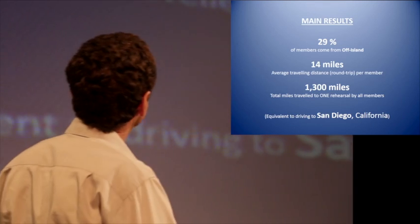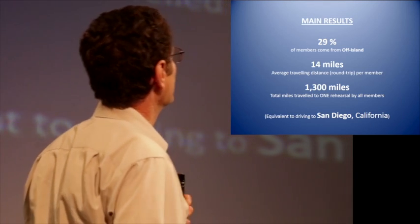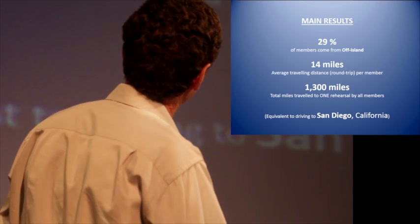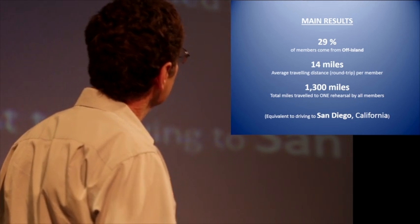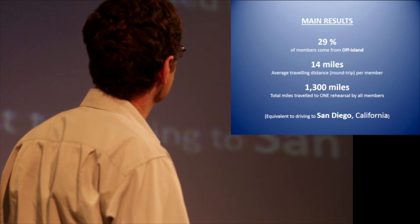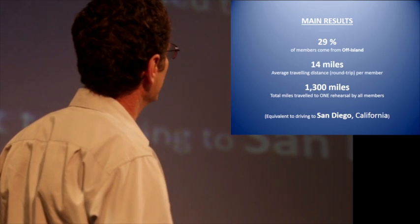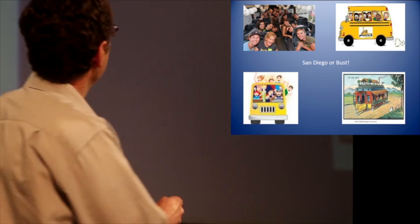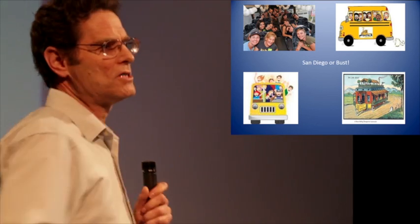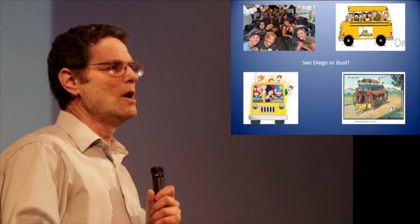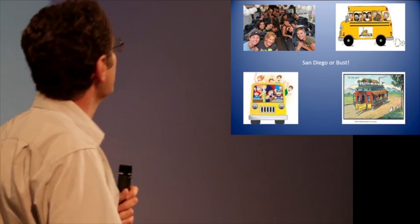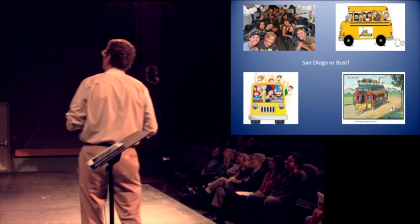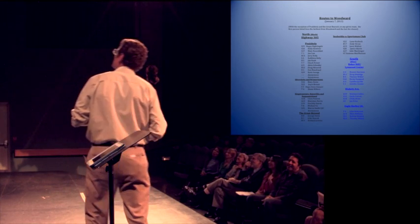The statistics are that 29% of the people came from off-island, from like Poulsbo and Kingston and places like that. The average distance was 14 miles per person round trip to one rehearsal, which totaled to 1,300 miles for everybody, which is the equivalent of going to San Diego. So I thought, why not just rent a van and drive down to San Diego, have our first rehearsal there, party for a week, soak up the sun, drive back, and it would be equivalent distance and we'd have a lot more fun. Unfortunately, that wasn't accepted by the choir.